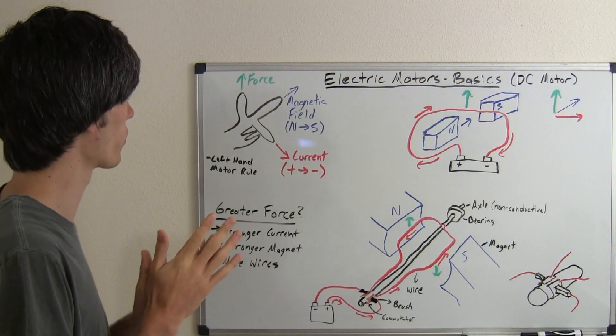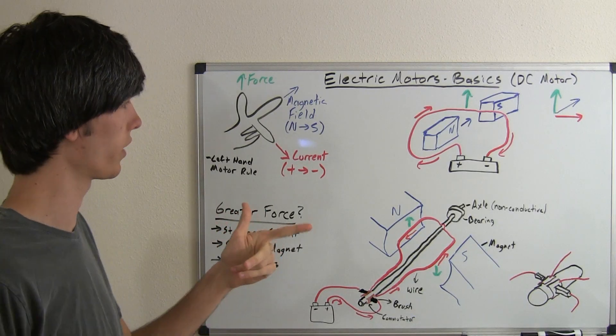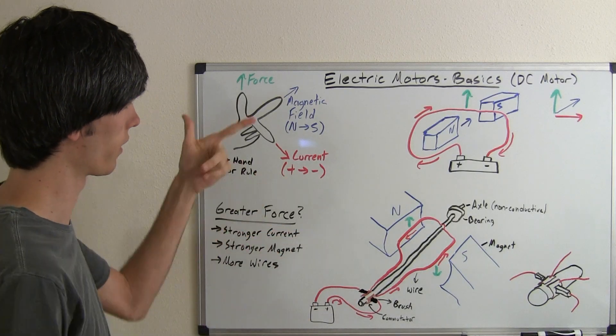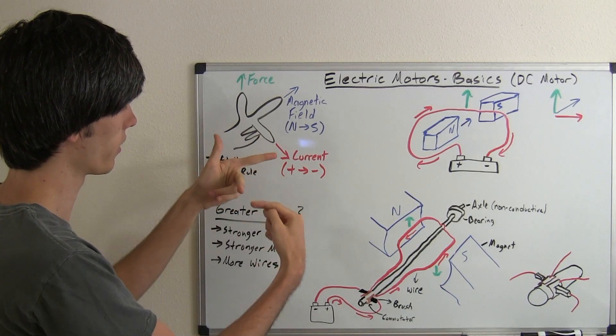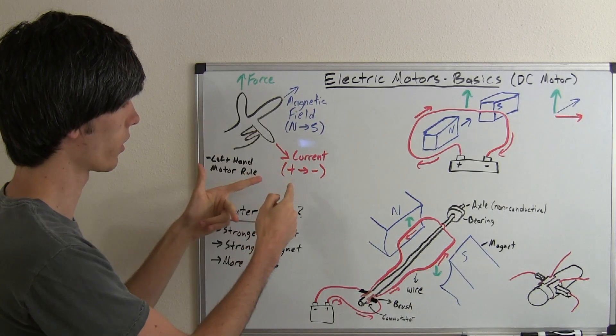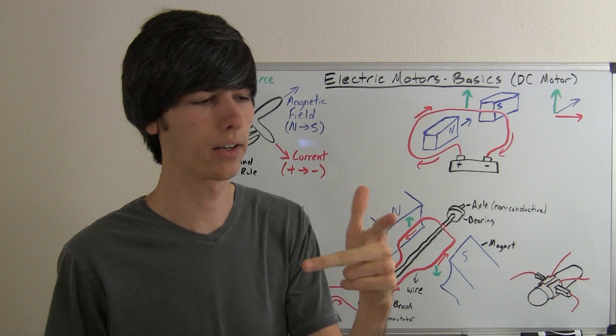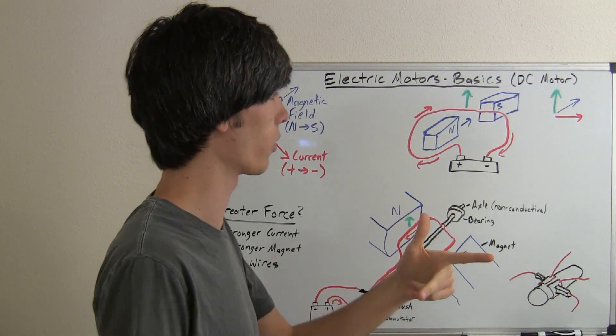To understand motors, the most basic principle you need to understand is the left-hand motor rule, which basically says if you have a magnetic field flowing from north to south in this direction, and a current flowing from positive to negative in this direction, then you're going to have a force on whatever that current is flowing through in this direction. So you can just use your left hand to figure that one out. You've got your magnetic field, your current, and your force.